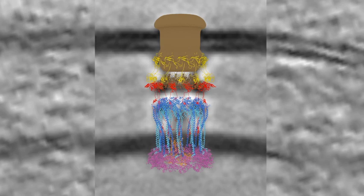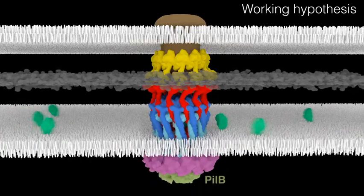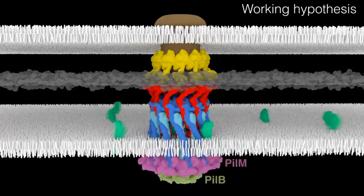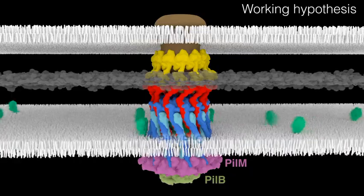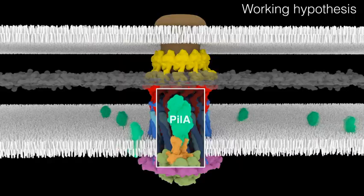Our current working hypothesis is that in the cytoplasm, the AAA ATPase PilB binds to the base of the machine. Conformational changes in the PilM ring likely propagate to the PilN, PilO cage, allowing PilA subunits to enter the assembly chamber.